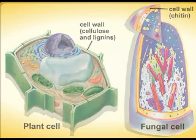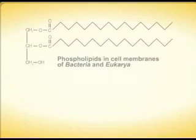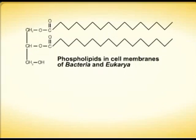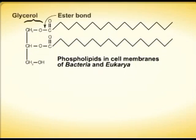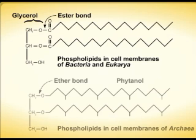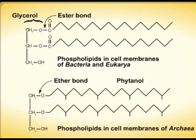The cell membranes of bacteria and eukarya contain phospholipids consisting of esters of glycerol, whereas the cell membranes of all archaea contain ethers of glycerol.